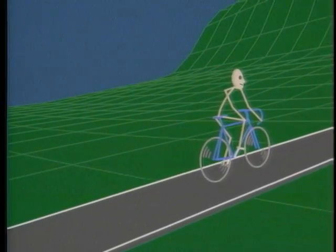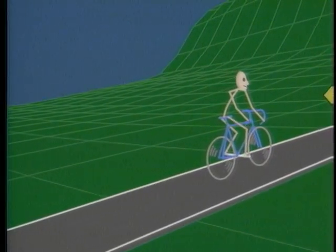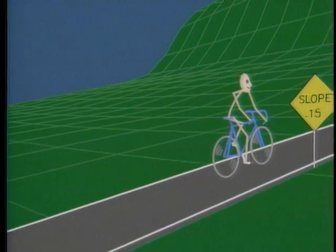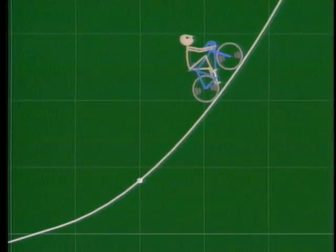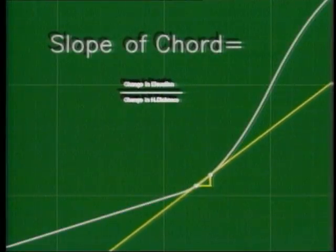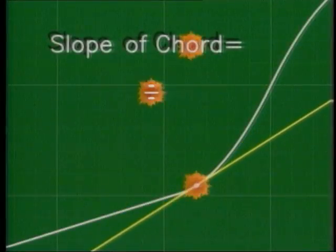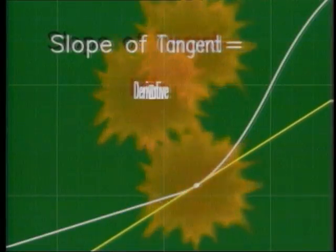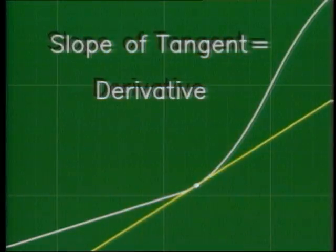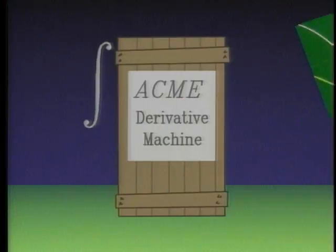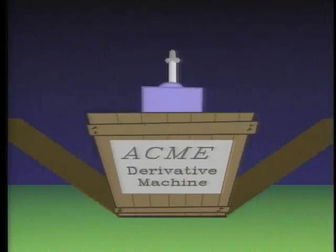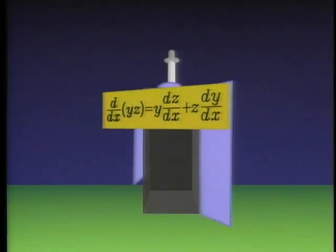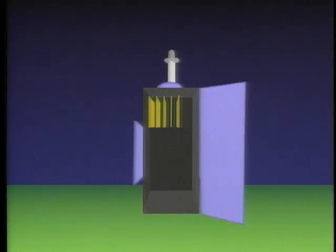Calculus is used to describe the motion of objects. The derivative measures the rate of change of a quantity. It is the limit of the slope of a chord as the two points get closer together, yielding the slope of the tangent. Symbolically, derivatives will be done by the derivative machine. It has built in the basic rules of differentiation.